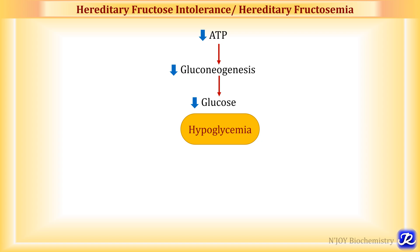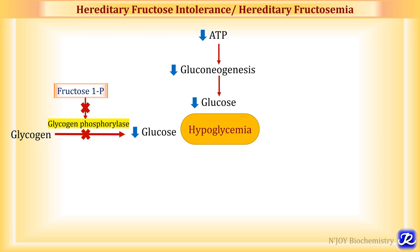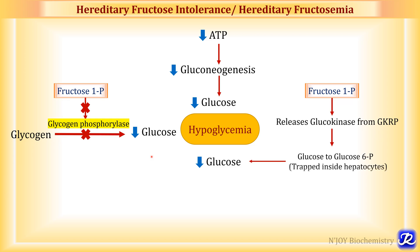Due to decreased gluconeogenesis there is decreased formation of glucose, further leading to hypoglycemia. A second important cause of hypoglycemia is that the accumulated fructose 1-phosphate is an inhibitor of the enzyme glycogen phosphorylase, which is important in glycogenolysis — the formation of glucose from glycogen. As fructose 1-phosphate inhibits glycogen phosphorylase, glycogen cannot be converted to glucose, further causing decreased glucose concentration, i.e., hypoglycemia.